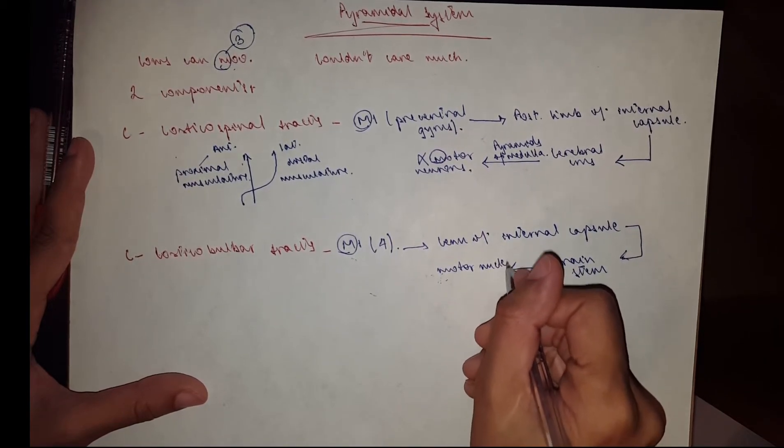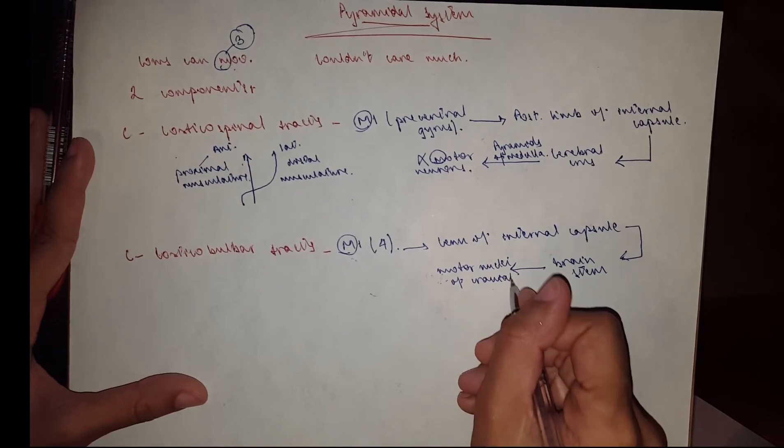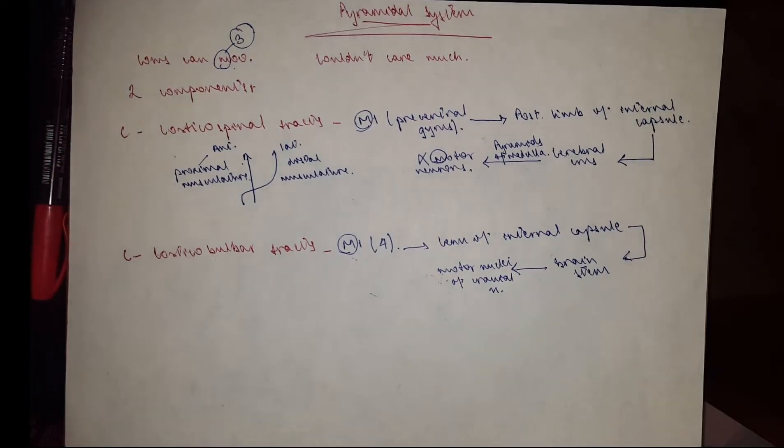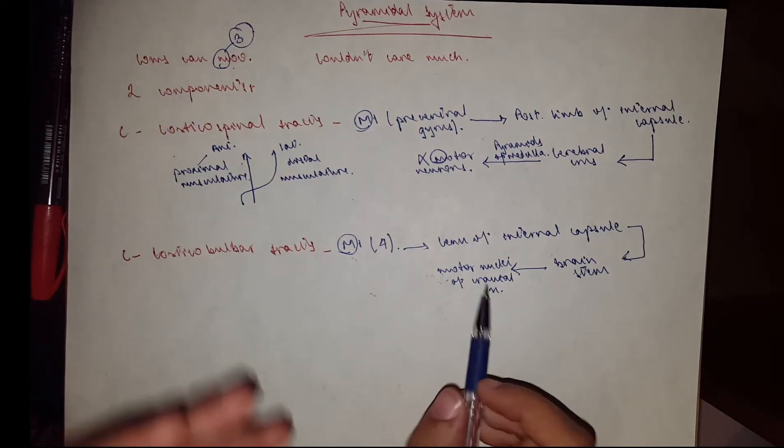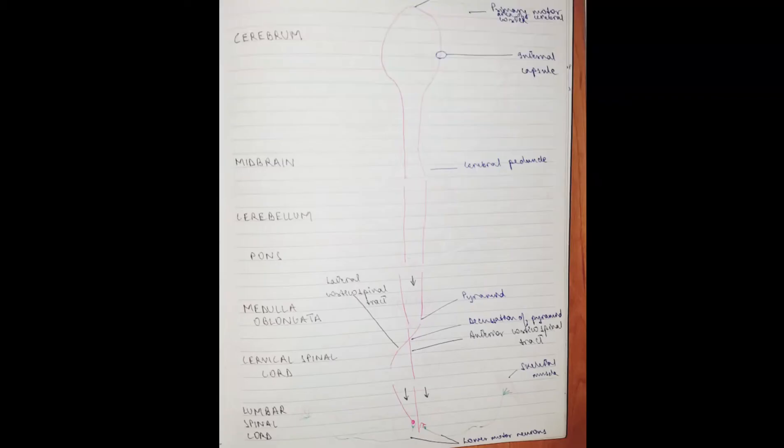Some of them cross over, some of them don't—it depends. And from here, of course, the motor nuclei will take you to the motor organs, and this is it for the pyramidal system. Pretty easy, I believe. So if you like this video, please do give it a thumbs up and subscribe for more videos, guys. Take care.